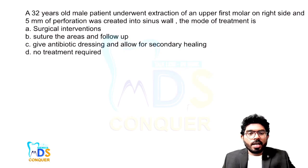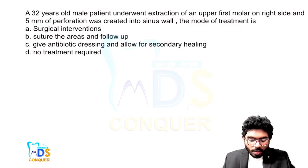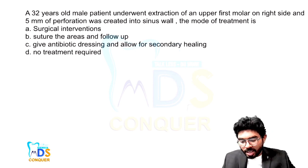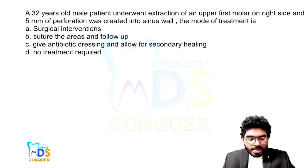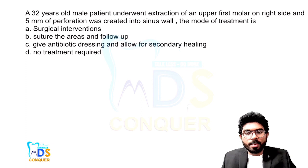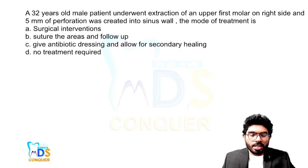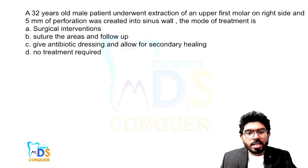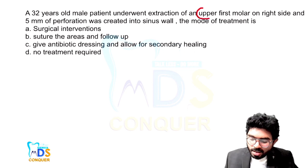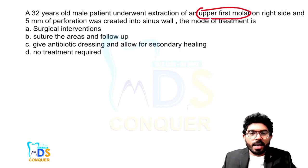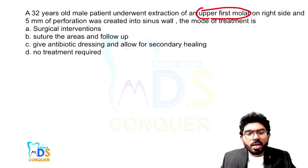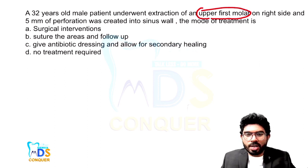The next question is related to oral surgery extraction. A 32-year-old male patient underwent extraction of the upper first molar on the right side, and a 5 mm perforation was created in the sinus wall. The mode of treatment is being asked. This question is talking about oroantral communication, which is most commonly associated with the upper maxillary first molar — that is an important point to note. The treatment plan for oroantral communication varies with the size of the perforation created.